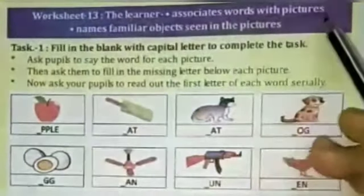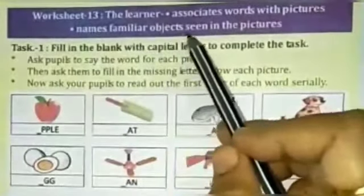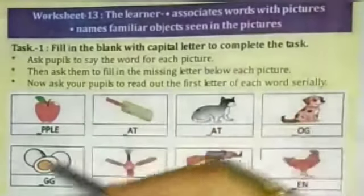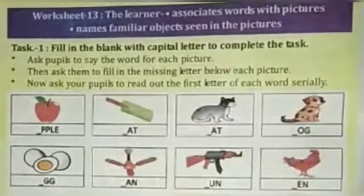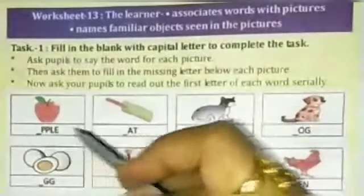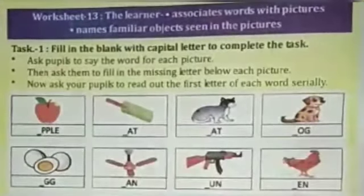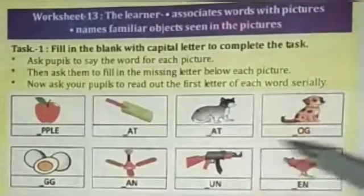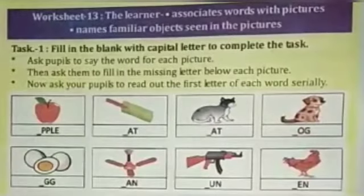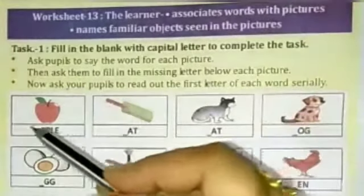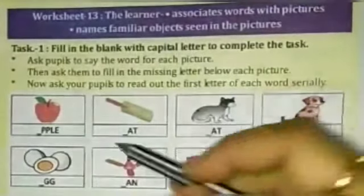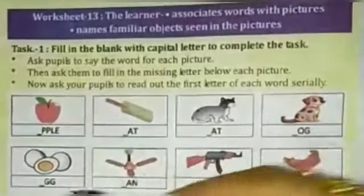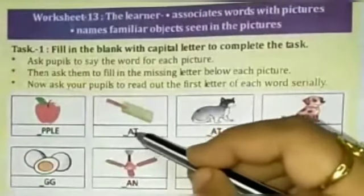Worksheet 13. The learner associates words with pictures, naming familiar objects seen in the picture. You can write the first letter and complete the name. I am going to write the first letter as the capital letter.